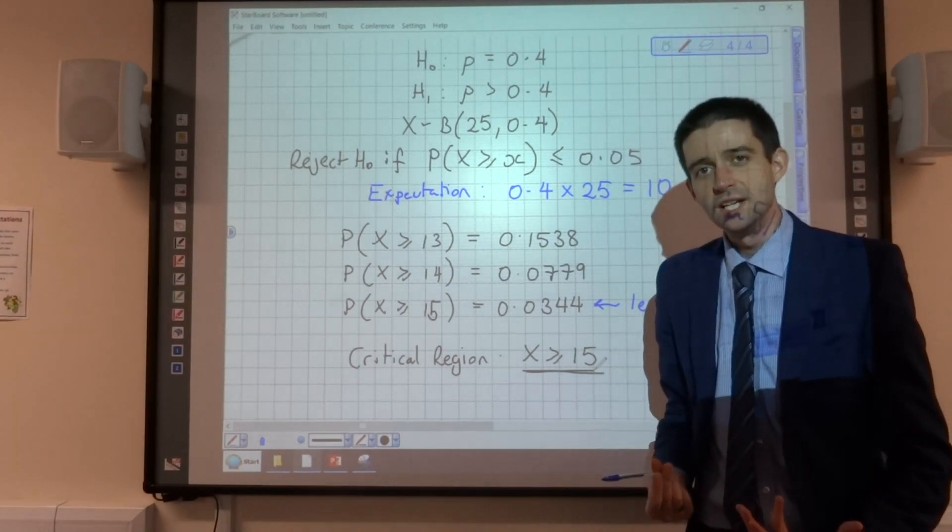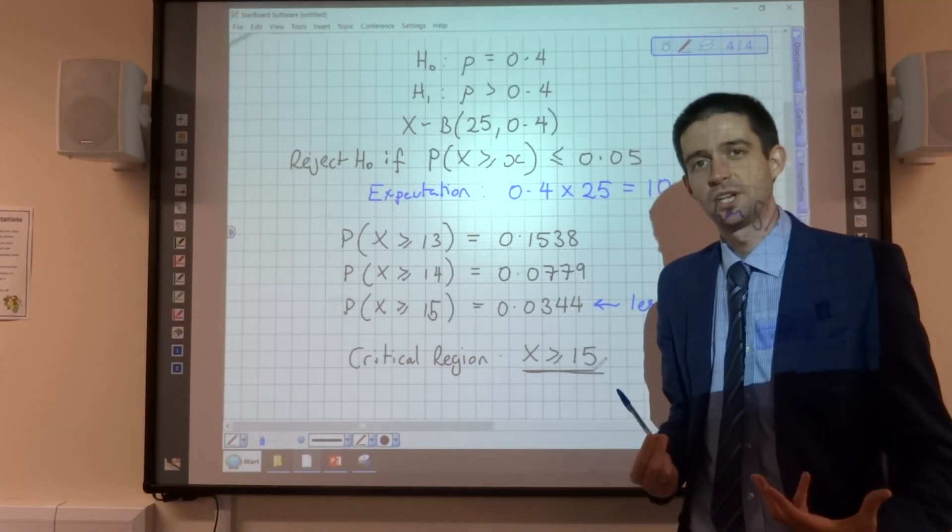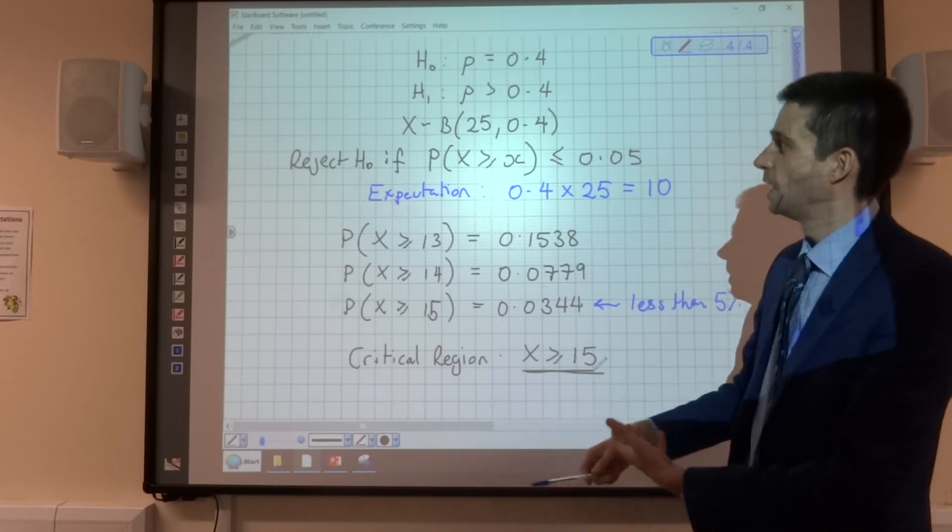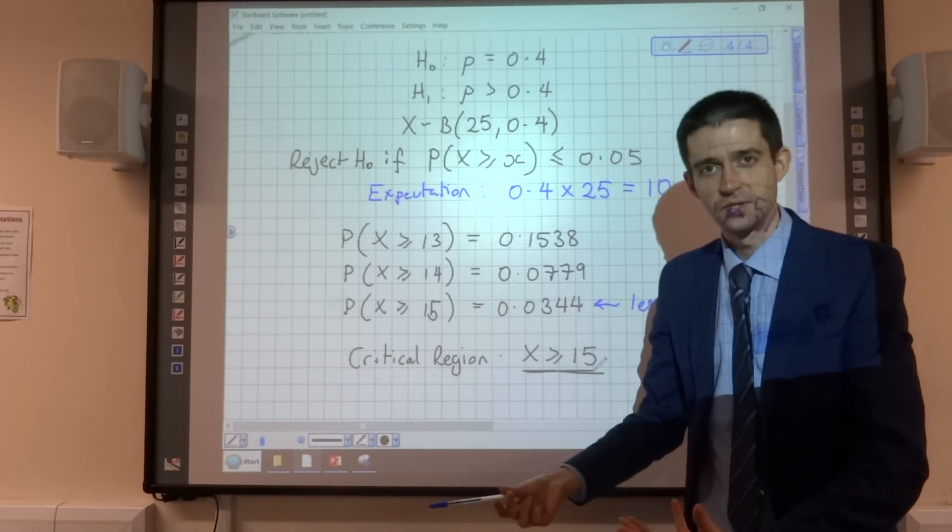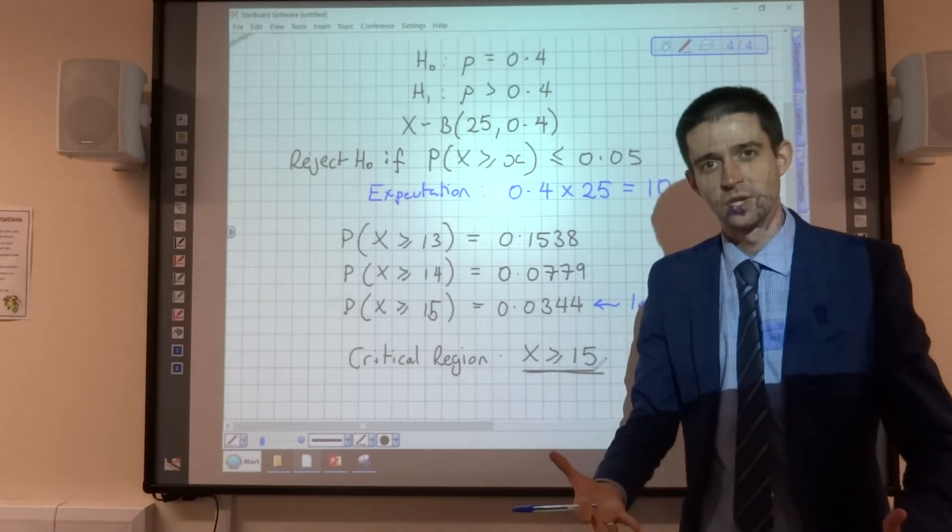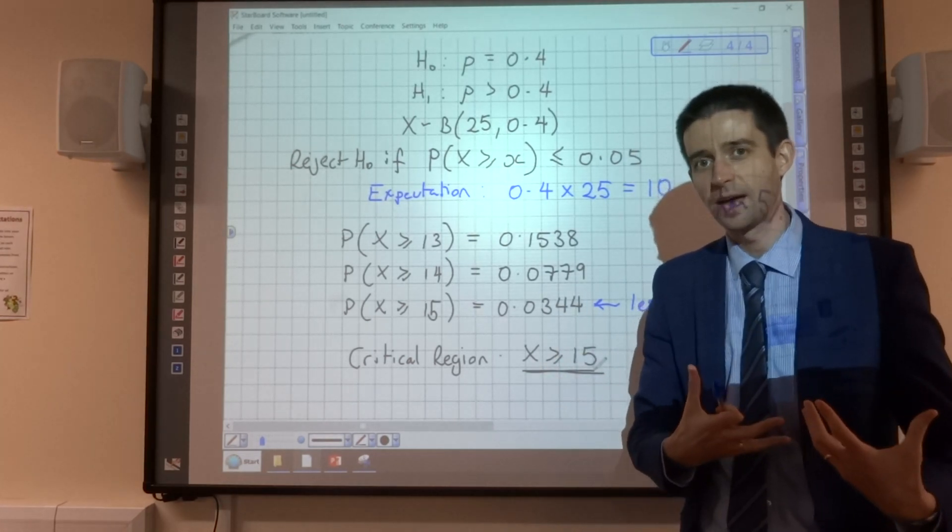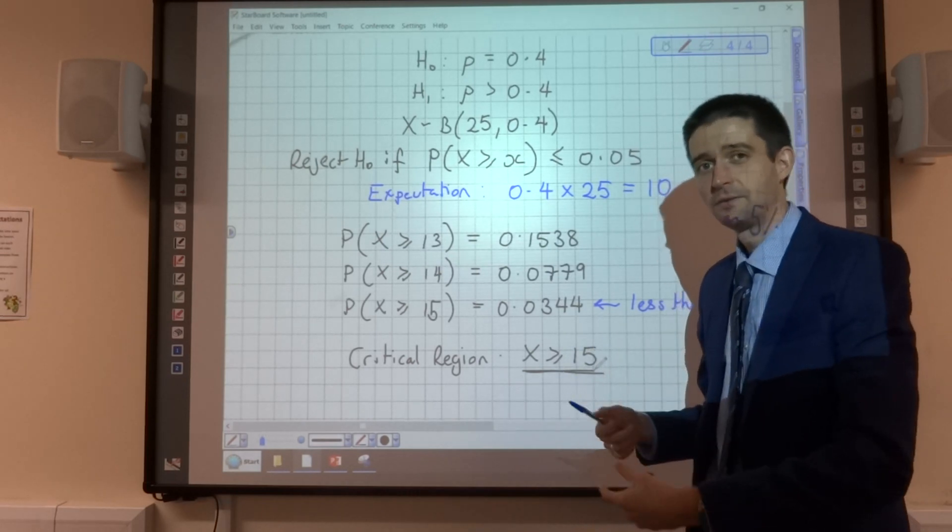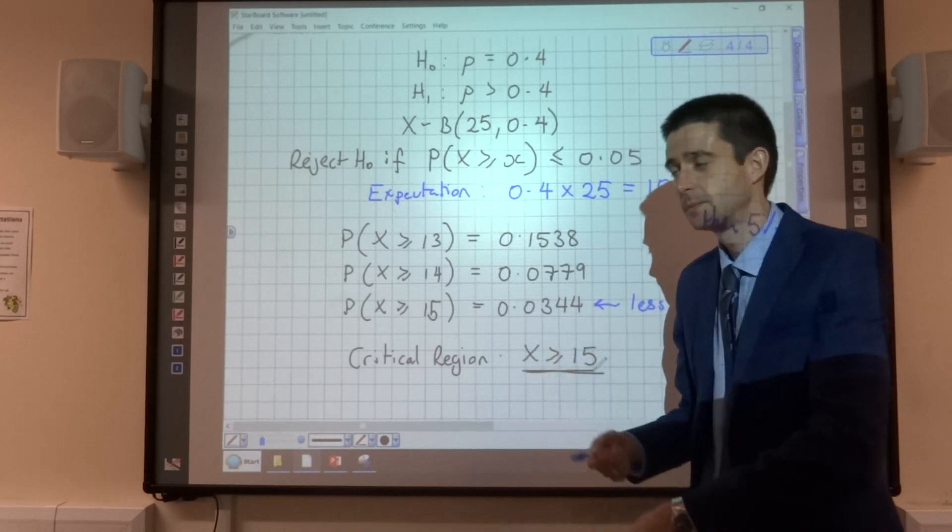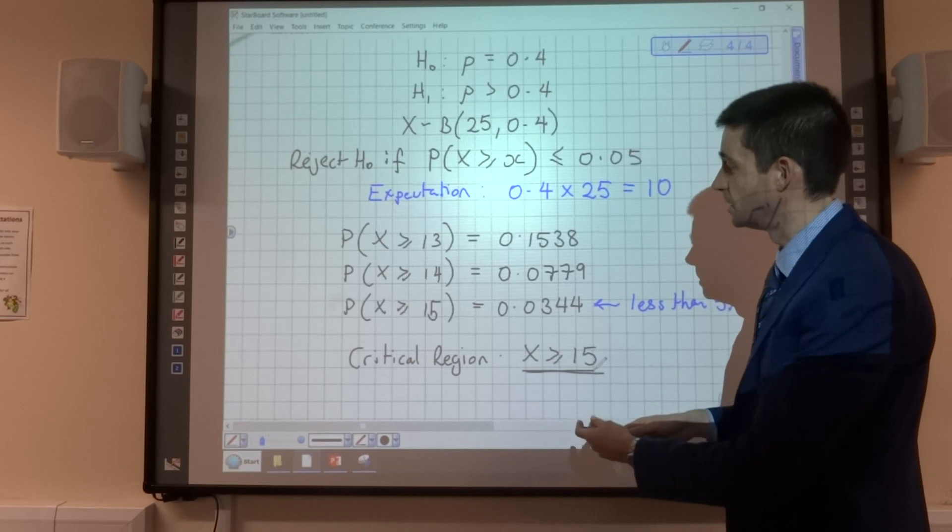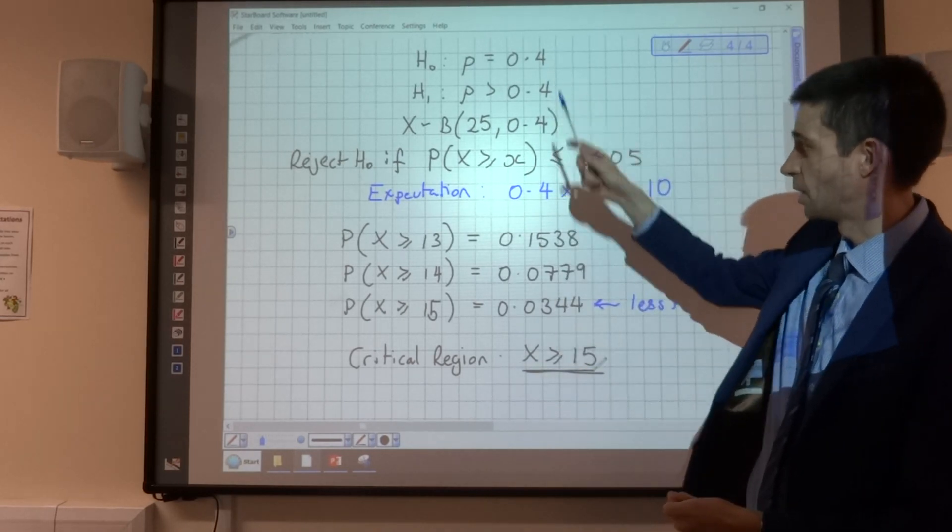And this is perhaps a more realistic way that hypothesis tests might be used, because you would define your significance level, define your sample size, and then consider, OK, out of my sample, how many positive results do I have to get that the chance is low enough that I reject my null hypothesis?